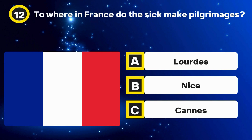Question 27. Which non-alcoholic cordial is made from pomegranates? Options: Grenadine, Elderflower, Pomegranate. The answer: Grenadine.